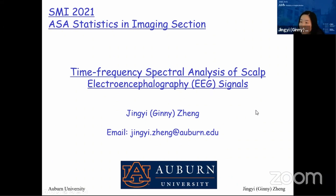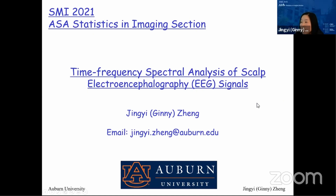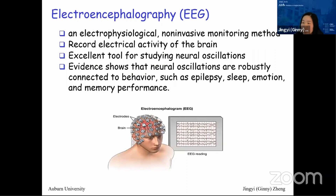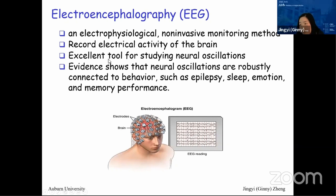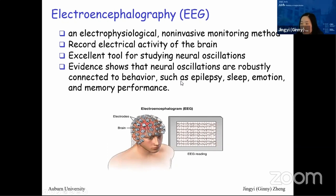I'm Jing Yuzhen from Auburn University, and today I will briefly talk about time-frequency spectral analysis of SCAV-ET data. EEG data is an electrophysiological and non-invasive monitoring method widely applied in neuroscience. It records electrical activity of the brain and has been an excellent tool for studying neural oscillations. Evidence has shown that neural oscillations are robustly connected to behaviors such as epilepsy, sleep, emotion, and memory performance.